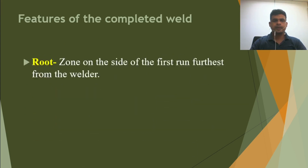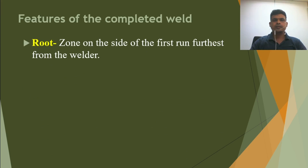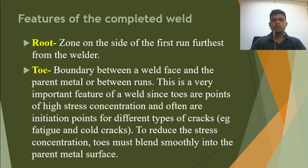The root is the zone on the side of the first run furthest from the welder. During welding, whatever the welder does on the first run is considered the root weld. The toe is the boundary between the weld face and parent metal, or between runs. This is a very important feature of a weld, since toes are points of high stress concentration and often initiation points for different types of cracks — for example fatigue and cold cracks. To reduce the stress concentration, the toe must blend smoothly into the parent metal surface.